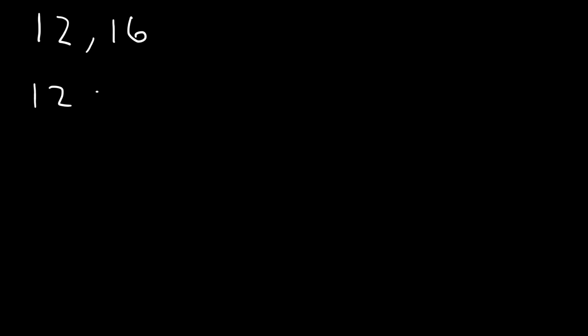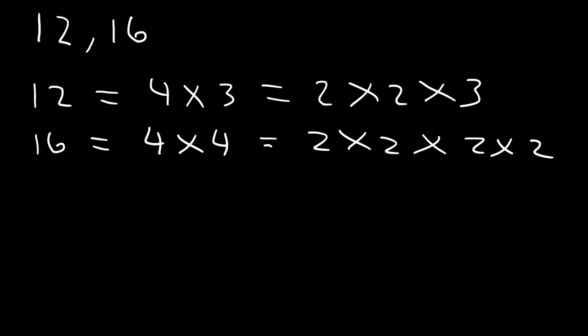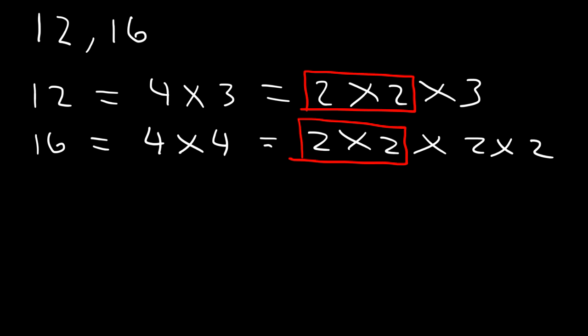Find the GCF between 12 and 16. Take a minute, pause the video, and work on that example. So, 12 is 4 times 3, and 4 is a composite number which we can break down into 2 times 2. So, that's the prime factorization of 12. For 16, which is 4 times 4, each 4 can be broken up into 2 times 2. So, it takes four 2s to get to 16. Now that we've written the prime factorization of 12 and 16, we can identify the greatest common factor. The first number has two 2s, and the last one also has two 2s. So, the greatest common factor is 2 times 2, which is 4. Those numbers are common to 12 and 16.